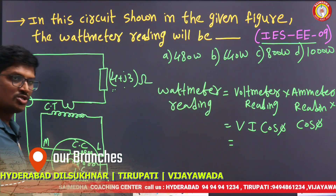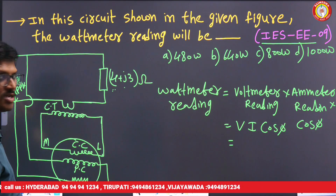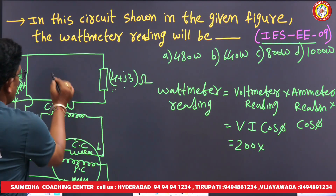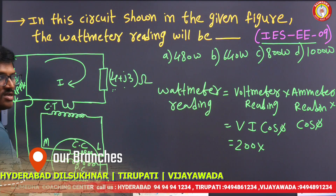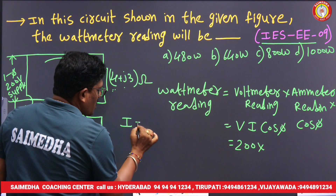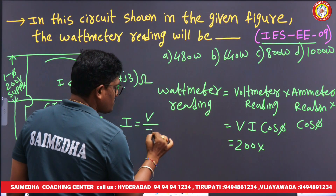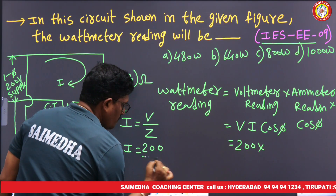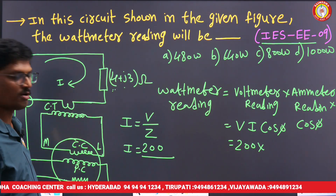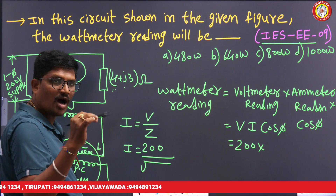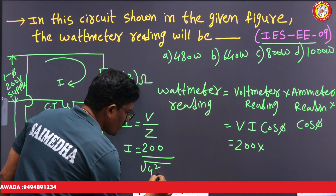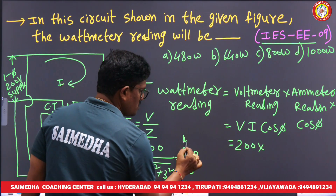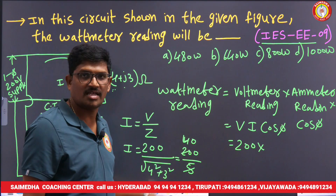The potential coil measures the supply voltage, which is 200 V. Now what about the current flowing in this circuit? According to Ohm's law, I = V/Z. In complex form, the impedance magnitude is root of R² + X², that is root of 4² + 3² = 5. So I = 200/5 = 40 amperes.